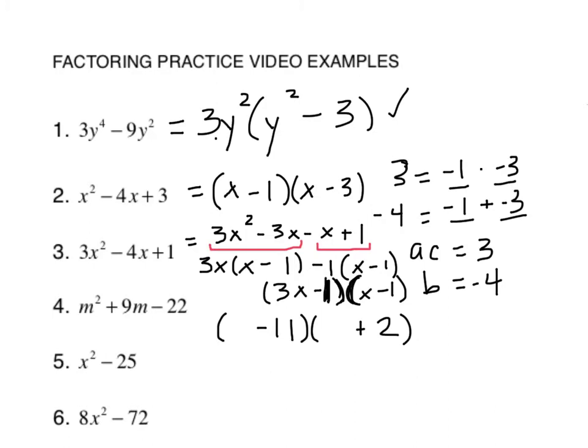It does not. Okay. So I'm going to have to write over top of it with a different color because I messed up. So it's got to be a plus 11 and a minus 2. And it's m. m minus 2, m plus 11. Double check it by multiplying.